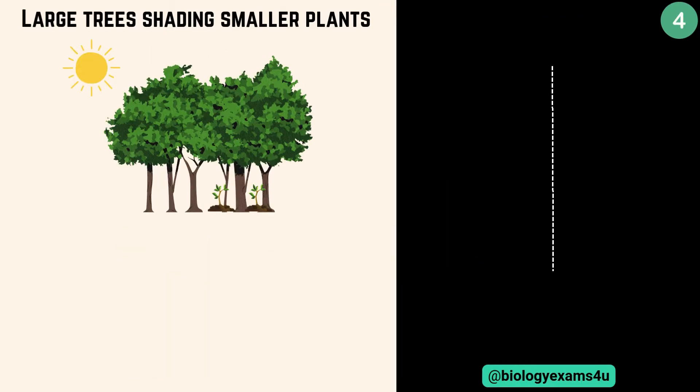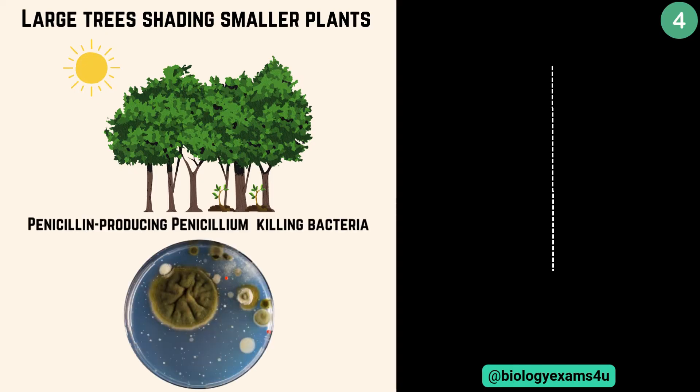Now the fourth interaction. Large trees shading the smaller plants — the shade can inhibit the growth of these understory plants without affecting the tree itself. Second example is penicillin, which produces certain chemicals that kill bacteria or inhibit bacterial growth.